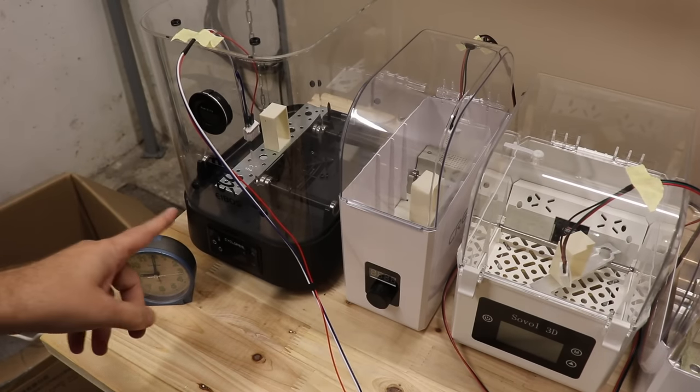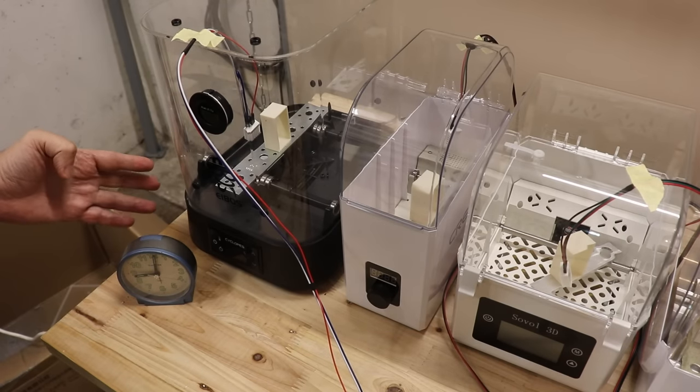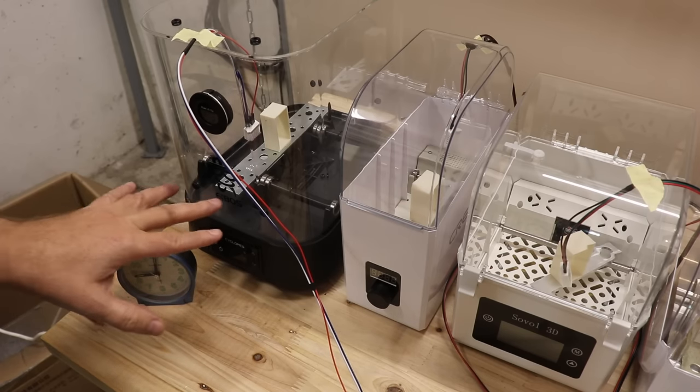The last one in this row is the iBoss filament dryer. It uses AC power, I think it was 100W, and as you can see it's quite big - two spools can fit inside at the same time.